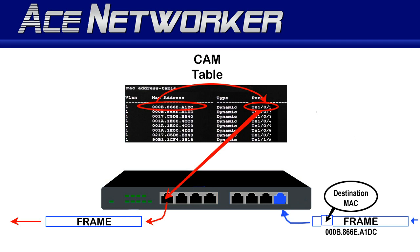When there's a match in the CAM table, the switch reframes the data from the incoming frame into a new frame and sends it out the correct physical interface to reach the destination MAC address. That's the basic principle behind the biggest workload — the primary thing any given network switch actually does.